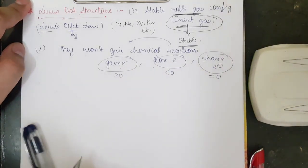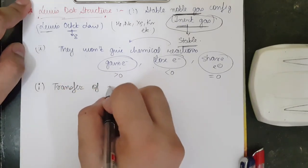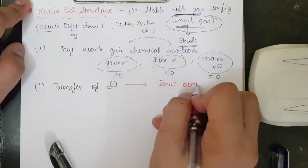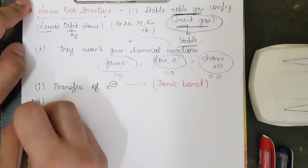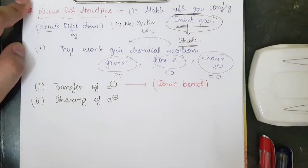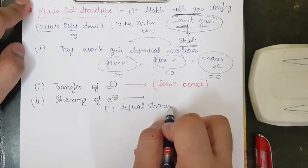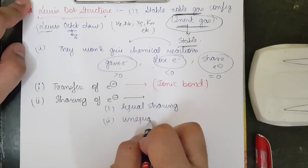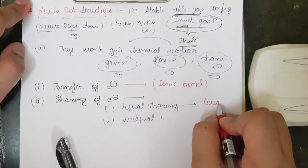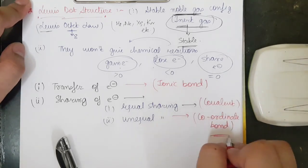When we have a transfer of electrons — meaning someone has gained or someone has lost — we have the formation of an ionic bond. We will make a separate video on this. Second, we can have sharing of electrons. Sharing can happen in two ways: equal sharing or unequal sharing. Equal sharing is called a covalent bond. When we have unequal sharing, we have the formation of a coordinate bond. That is the logic you need to understand.